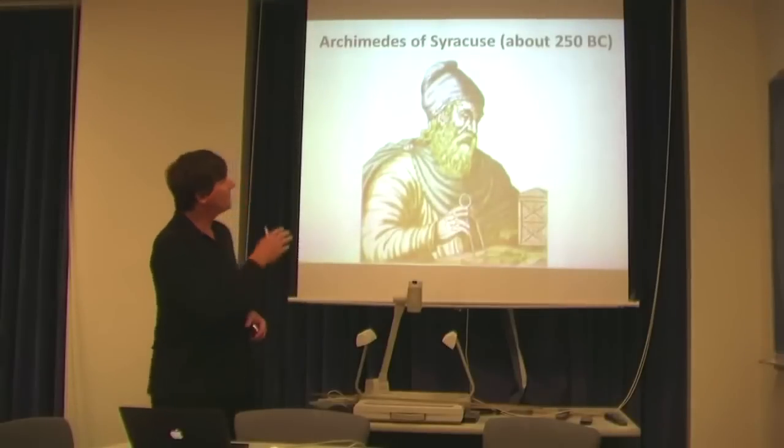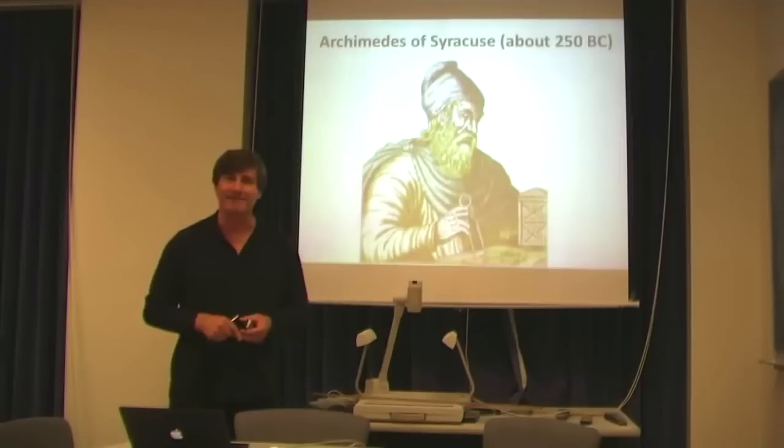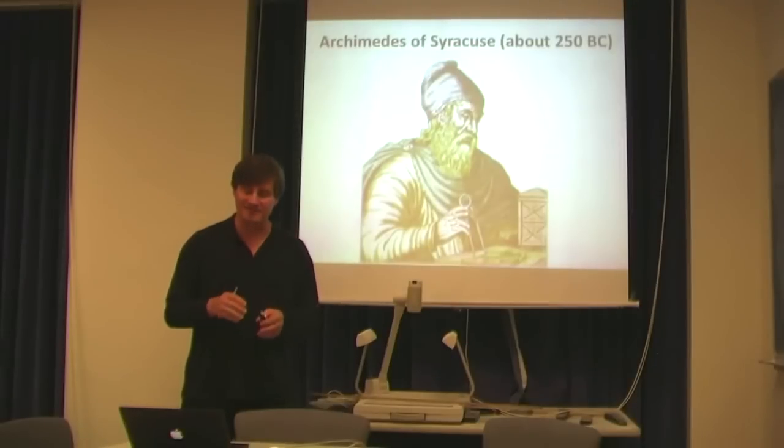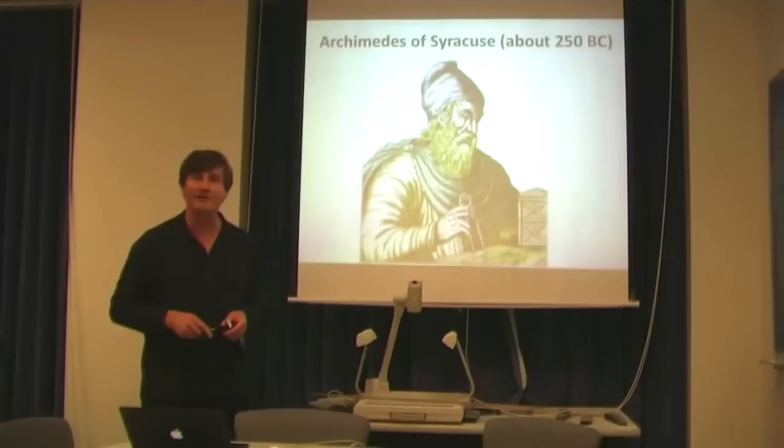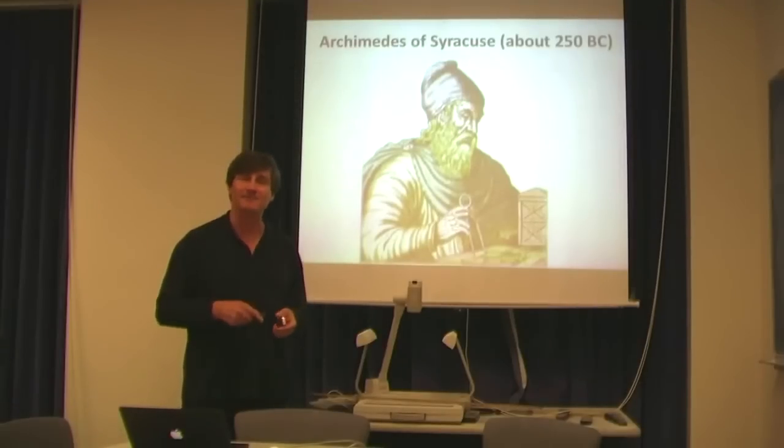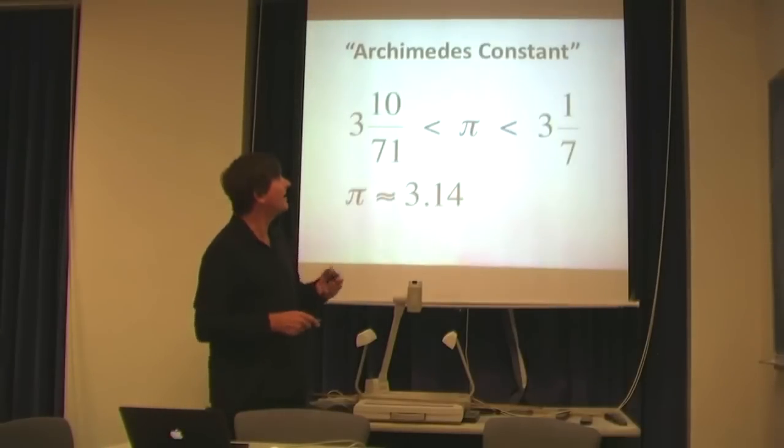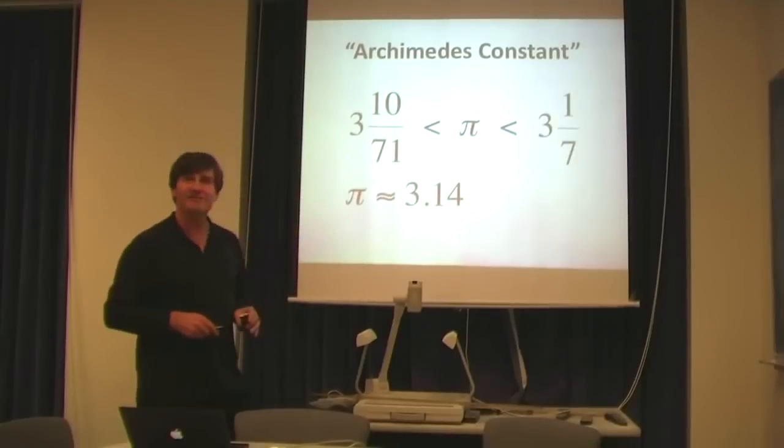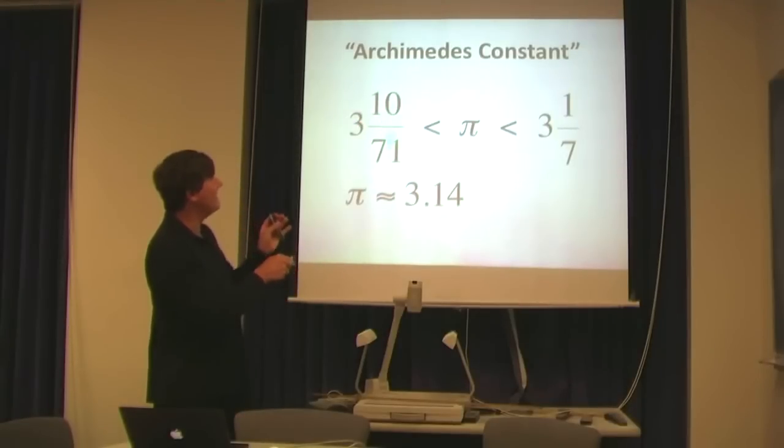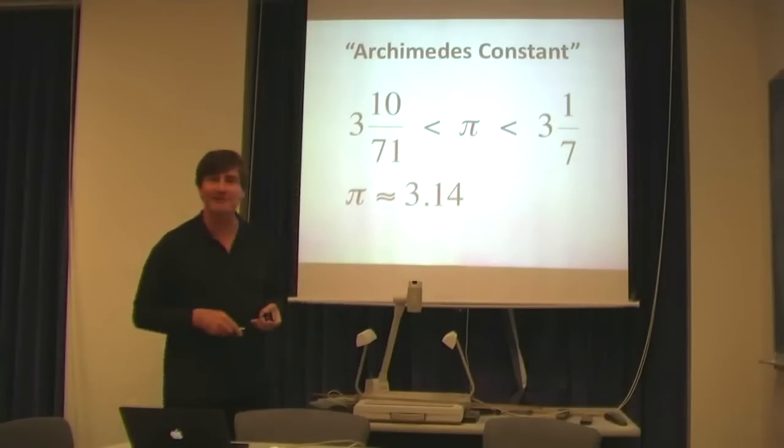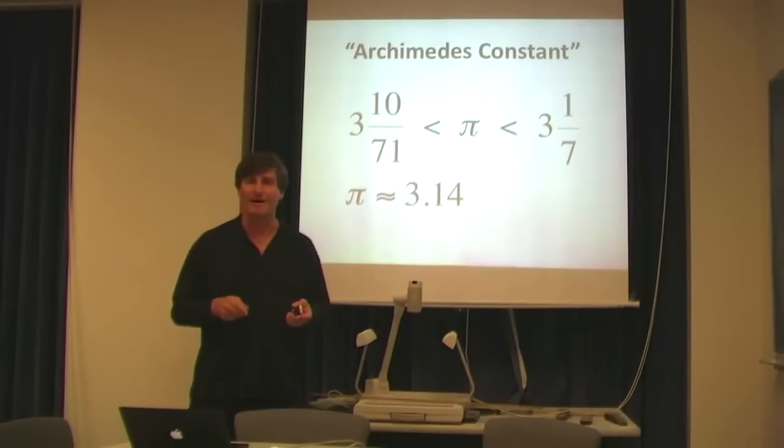The first theoretical computation of the value of pi, approximately 3, is believed to have been done by Archimedes of Syracuse around 250 BC. For this reason, pi is sometimes known as the Archimedes constant. Archimedes figured out that the value of pi lies between 3 and 10/71sts and 3 and 1/7th, which means pi is approximately 3.14.